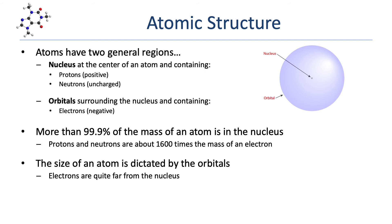Most of the mass of an atom is contained within the nucleus. Those two nuclear particles, protons and neutrons, are about 1,600 times more massive than an electron. That means that over 99.9% of the mass of an atom is actually contained within the nucleus. The size of an atom is actually dictated by those orbitals, which are, in a relative sense, very, very far away from the nucleus.